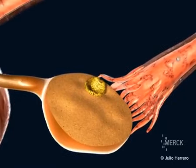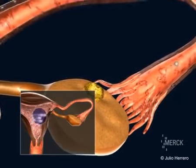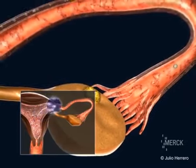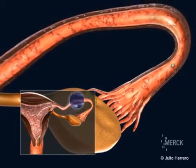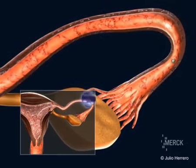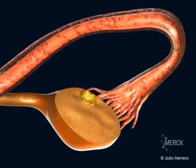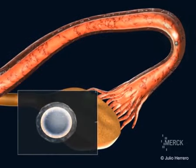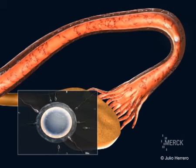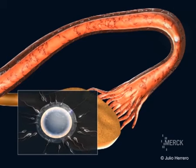If sexual intercourse occurs, the semen deposited in the vagina starts its ascension into the tube, and the sperm eventually arrive at the oocyte. One of these will succeed in penetrating into the interior of the oocyte.